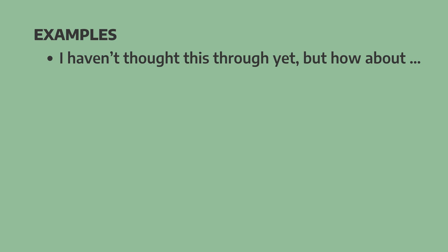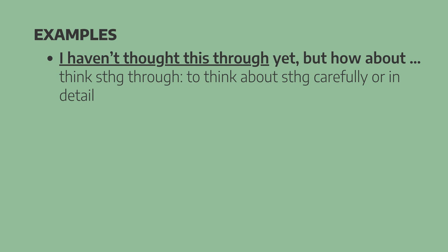The next thing we're going to look at is introducing ideas and suggestions — something we often need to do in meetings. I haven't thought this through yet, but how about... To think something through means to think about something carefully or in detail. If you say you haven't thought something through, you're letting people know it's a spontaneous or new idea. This is a good phrase to use when you're brainstorming.